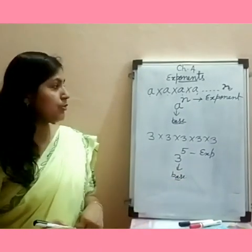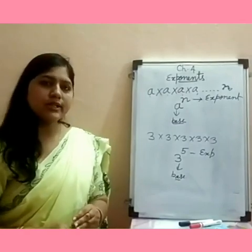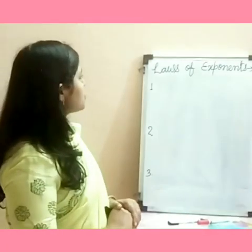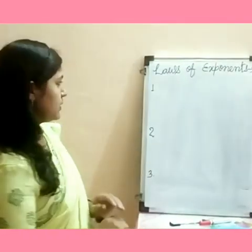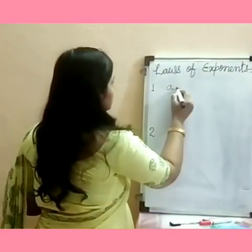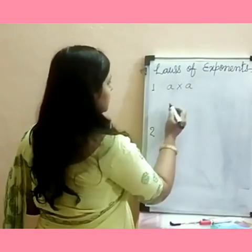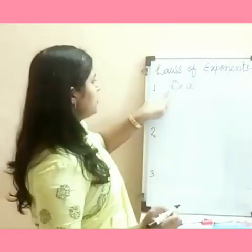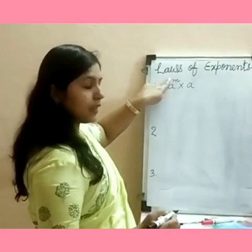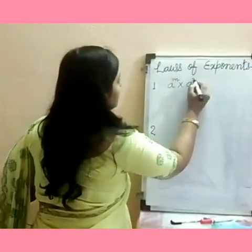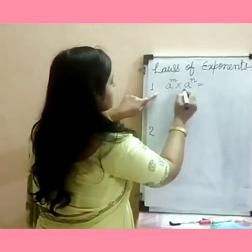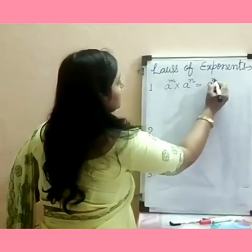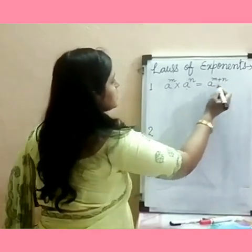There are some rules, or laws, of exponents. The first law is: if two numbers with the same base are multiplied together — for example, a raised to the power m, multiplied by a raised to the power n — since the bases are the same, we keep the base 'a' and add the exponents: a raised to the power m plus n.